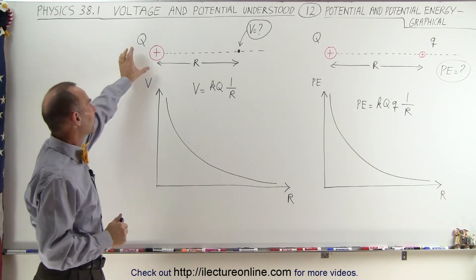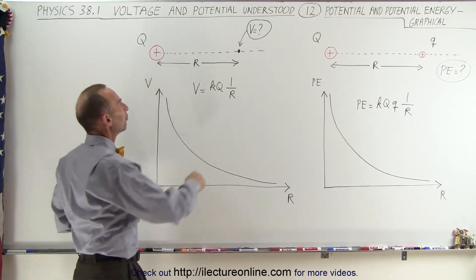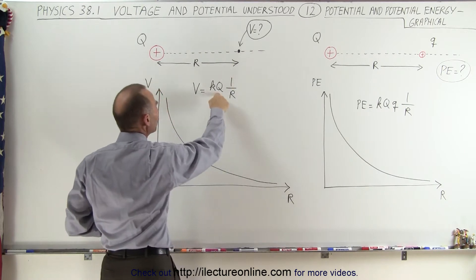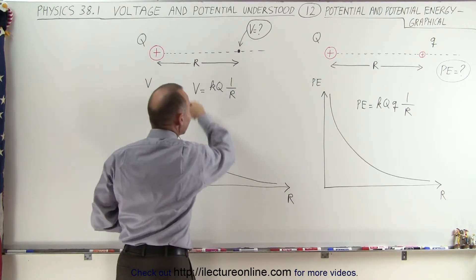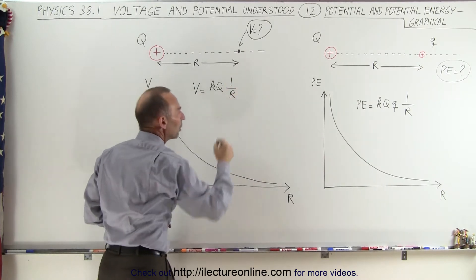The first one, we have a single point charge, it has a charge of Q, and we want to know the voltage at some arbitrary distance R. The equation is KQ over R, but if you write it like this, the voltage or potential is equal to a constant times 1 over R.